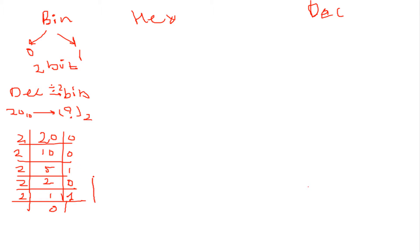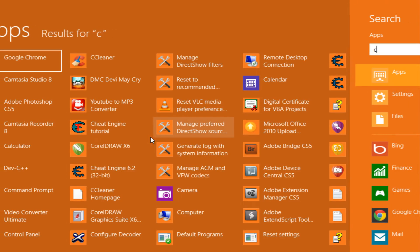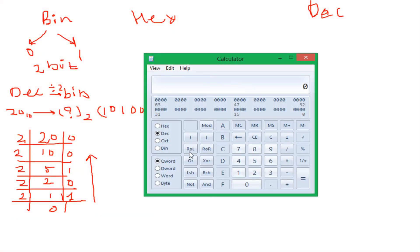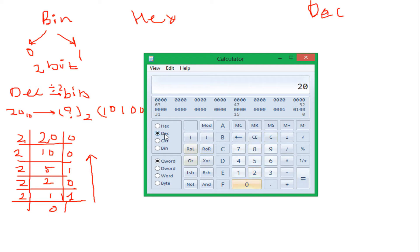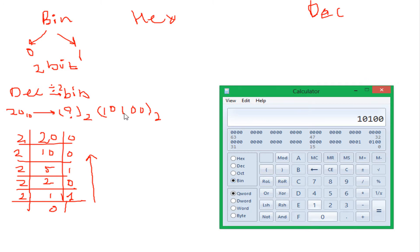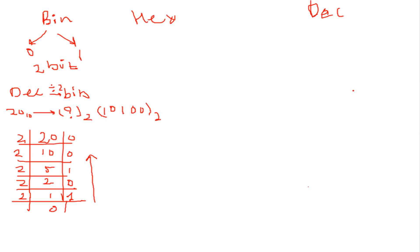We write the remainders from bottom to top, so our binary number will be 10100. That is 20 in decimal. We'll cross-check it — already in programmer mode, 20 in decimal becomes 10100 in binary. Confirmed.